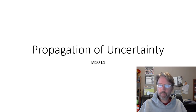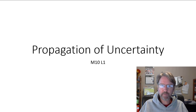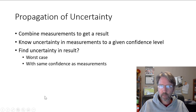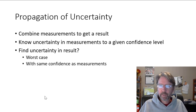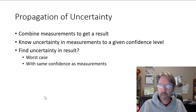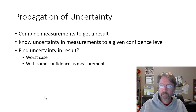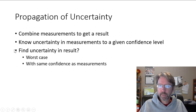Let's talk about propagation of uncertainty — this is chapter 7 in our text. The idea is that if we have measurements with known uncertainty, we've seen how to calculate uncertainty in measurements, but what if we have to calculate parameters using combinations of measurements? If we know the uncertainty in the individual measurements, can we find the uncertainty in a calculation?